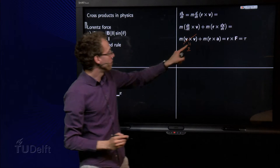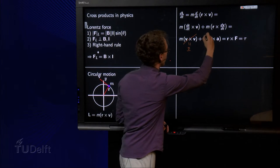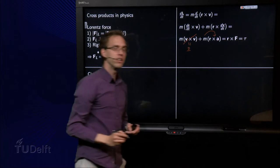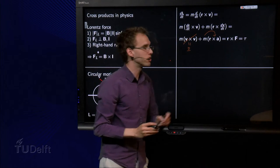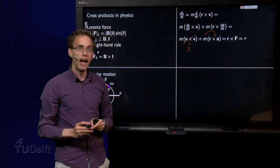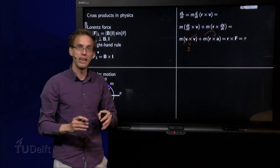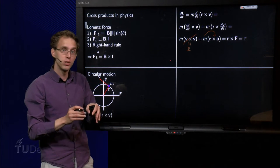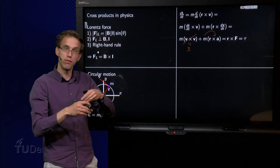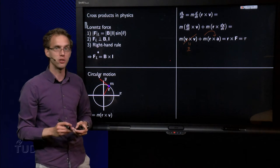And then we have here r cross a with an additional m, taking the m. And then we get r cross m times a, which is force. So we get r cross force. And this quantity, r cross force, is called a torque. And that is what you need. You need to exert the torque if you want to change the circular motion of a particle.